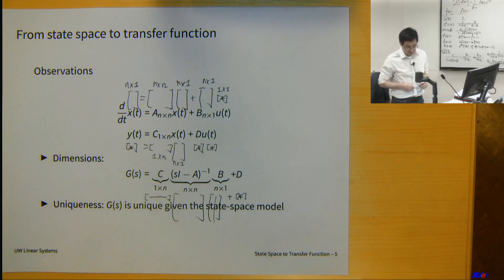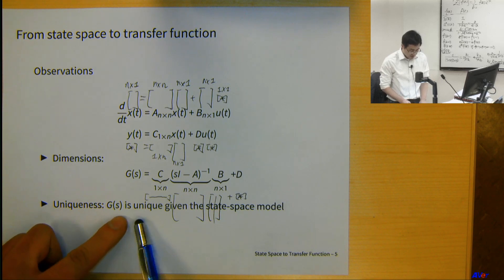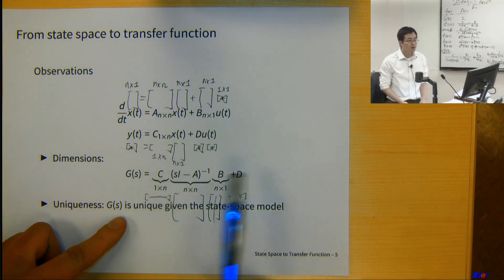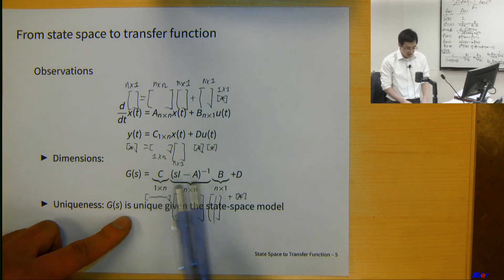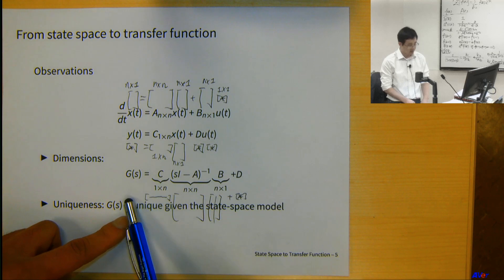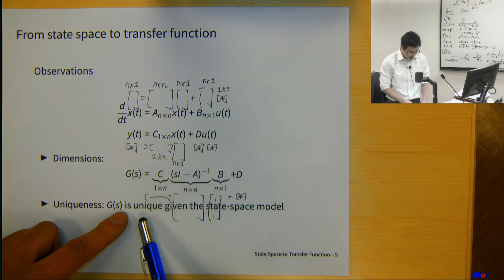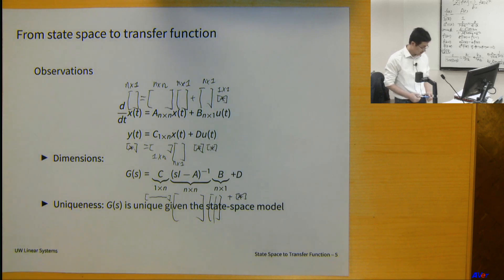So that's the first observation. The second observation is there's no way to have ambiguities in this computation. If you give me A, B, C, D, then the result is fixed. Once A, B, C, D is given, G is given. G is unique.